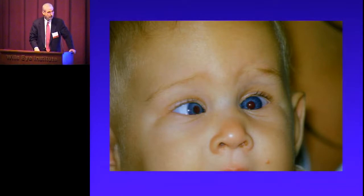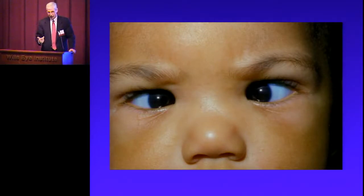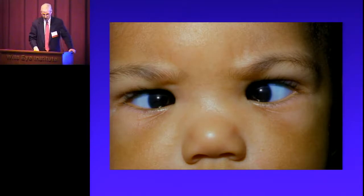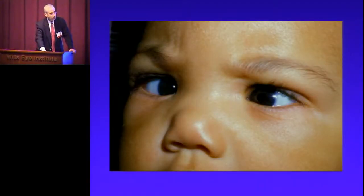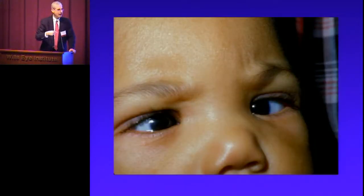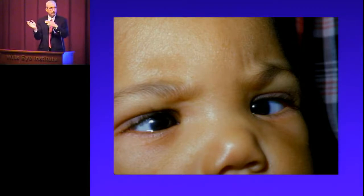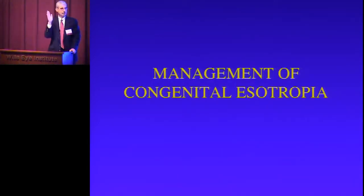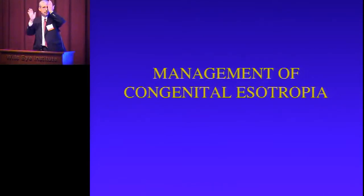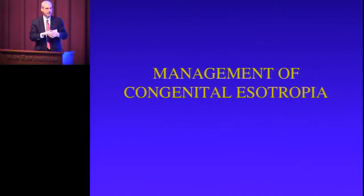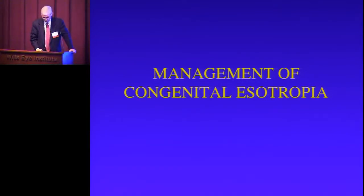Here's a very large and constant esotropia where the child is fixating with his left eye. Another child with a very large and constant esotropia — in this close-up, it's almost difficult to tell which eye he's focusing with. Here's the cross-fixation: he's using his right eye to look to the left and his left eye to look to the right, looking like he's not moving his eyes much — resembling bilateral sixth nerve palsies. You can tell the child can actually move the eyes out by covering one eye briefly to demonstrate abduction, or by using a doll's head maneuver.